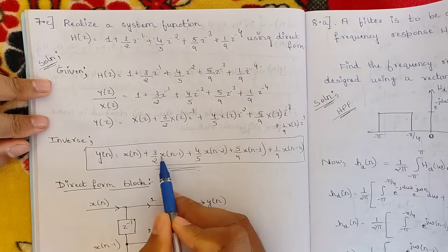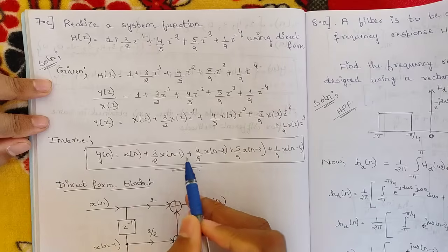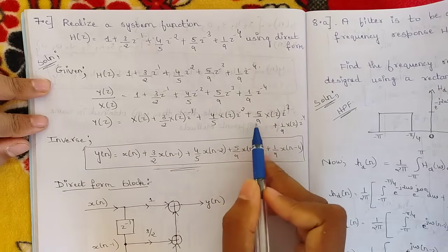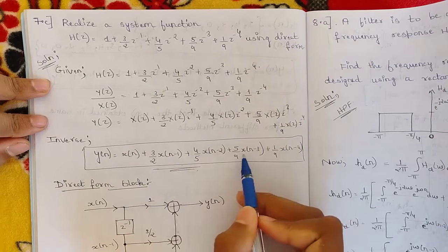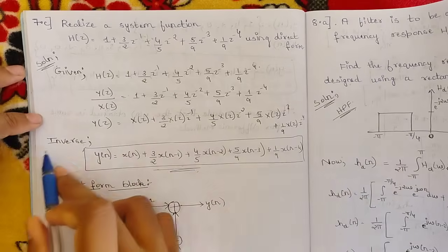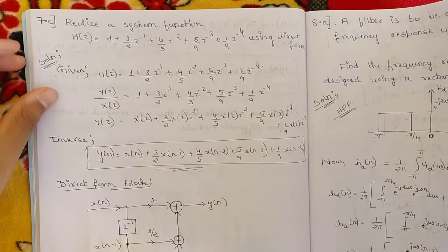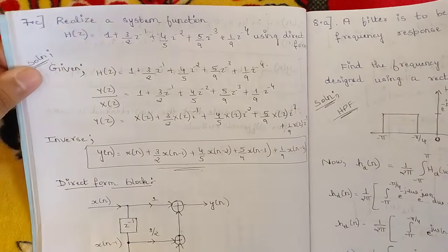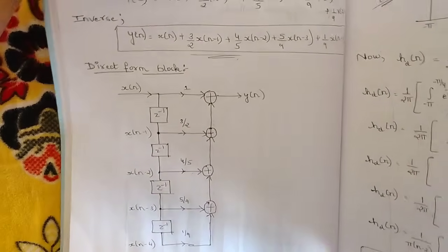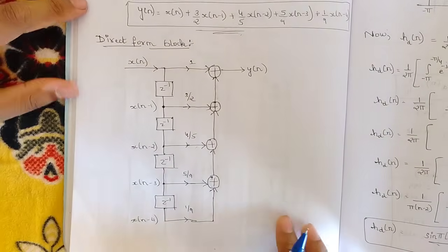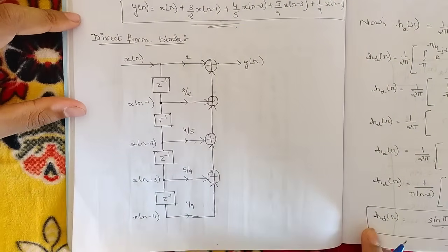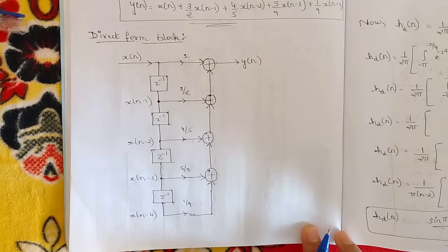Continuing the inverse transform: y(n) equals x(n) plus 3/2 x(n-1) plus 4/5 x(n-2) plus 5/9 x(n-3) plus 1/9 x(n-4). This is the required y(n). For this expression, we write the direct form block structure as shown.